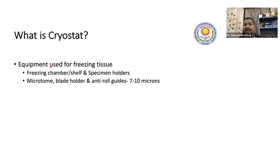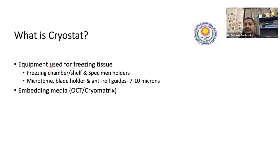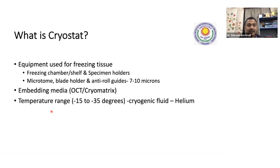The cryostat is essentially equipment used to freeze the tissue as soon as possible as well as cut sections. In histopathology we use paraffin for embedding, but here we will use embedding media called cryo matrix or optimum cutting temperature media. The temperature range in a cryostat is minus 15 to minus 35 degrees centigrade, and cooling is done with the help of a cryogenic fluid — helium.